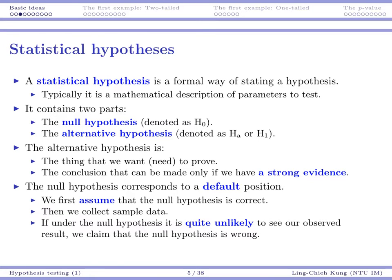So what are they? The alternative hypothesis is the thing that we want or need to prove. It is a statement that we're going to claim only when we have very strong evidence for it. So if we see something that provides strong evidence, then we conclude that the alternative hypothesis is true. On the other hand, the null hypothesis is actually our default position. Before we collect any data, before we see anything, we would assume that the null hypothesis is correct.